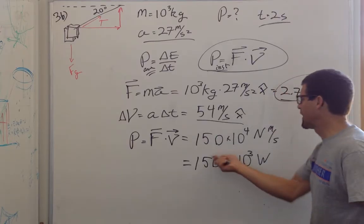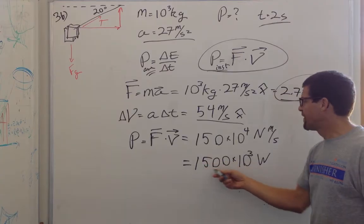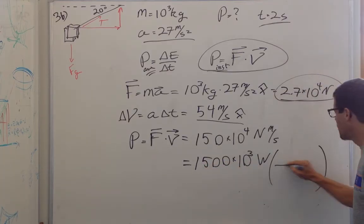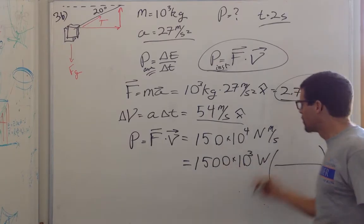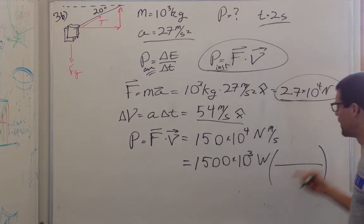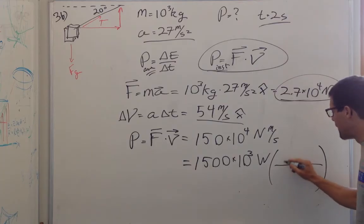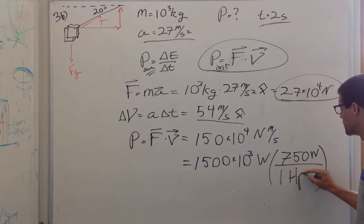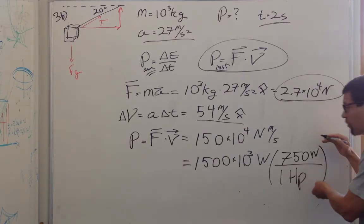When we multiply them together, we get 1,500 kilowatts. And so what's that in horsepower? A good thing to remember if you get confused about changing units is you can always multiply by 1. So I can always multiply by 750 watts in 1 horsepower. Now I can do that because this is just 1.